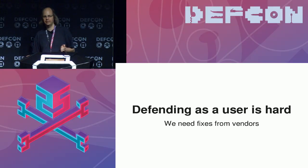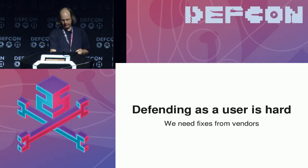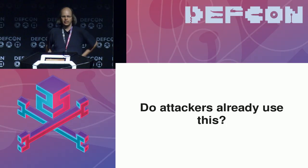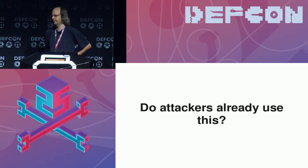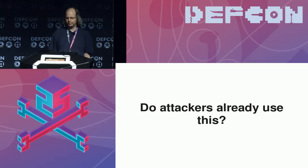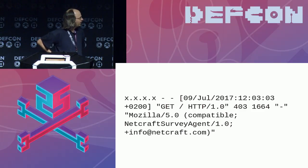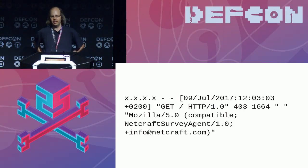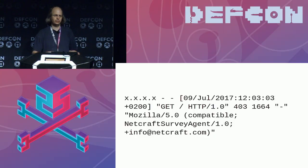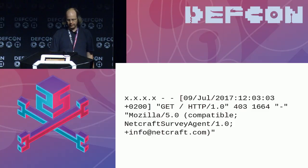Defending as a user is hard here — we really need fixes from vendors. I was also wondering: do attackers already use this? Does anyone already exploit it? I sent some test requests with random subdomains from my domains and checked if anyone would access them. I saw the NetCraft Survey Agent in the log — NetCraft is a company that mainly does web statistics, so this is likely non-malicious. But it's a good example that this data can be used for attacks and also for legitimate purposes like doing web statistics. I think nobody is exploiting this yet, but that may change.